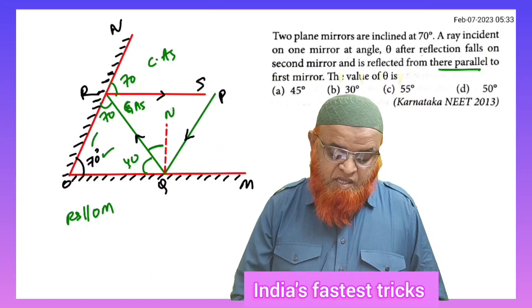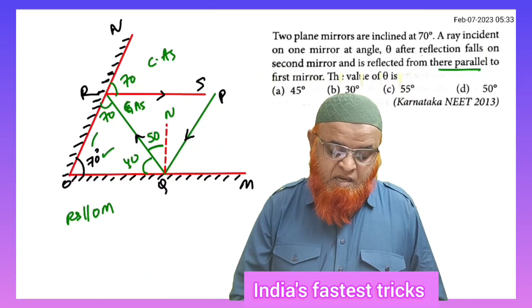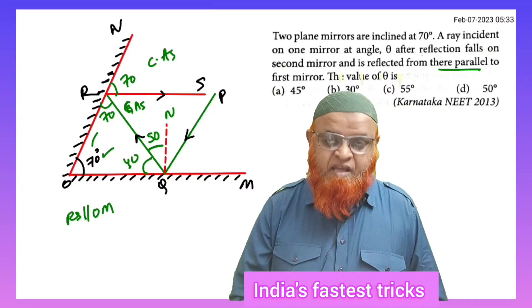But this plus this together is going to be 90 because this is normal. If this is 40, then the remaining part is going to be 50. That's it.